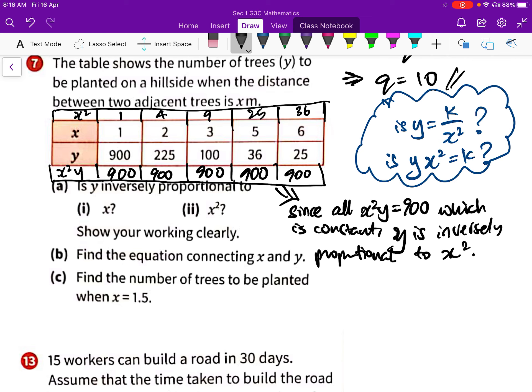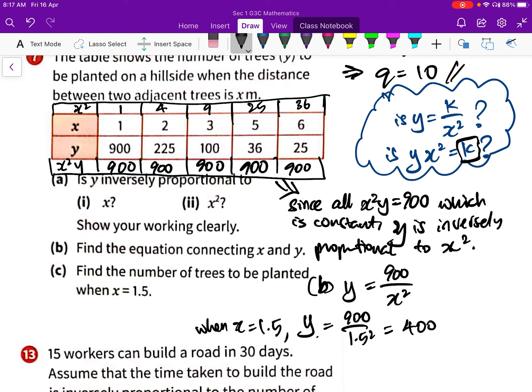So, final equation connecting X and Y. When we have our X square Y equals to 900, that is our K value already. We're going to substitute that back into the original equation. So, part B, we have already done that. Y equals to 900 over X square. That is our formula. Find the trees to be planted when X equals to 15. When X equals to 1.5, sorry. When X equals to 1.5, Y will be 900 over 1.5 square. You get 400.